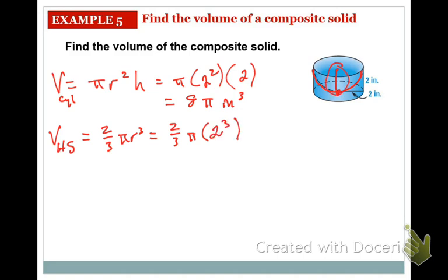So, 2³ is 8. Then we go 8 times 2, which is 16. 16 divided by 3, which is going to give you 5.33π cubic inches.